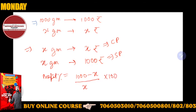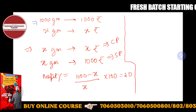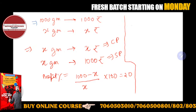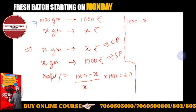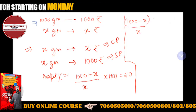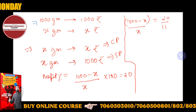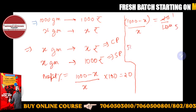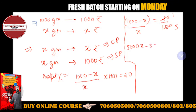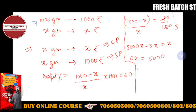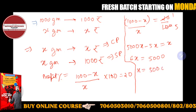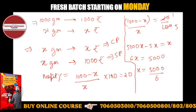Profit percent = (SP − CP) / CP × 100. That is (1000 − x) / x × 100 = 20%. So (1000 − x) / x = 20/100 = 1/5. By cross multiplication: 5(1000 − x) = x, so 5000 − 5x = x.